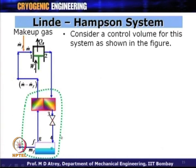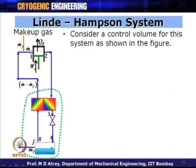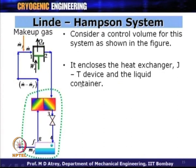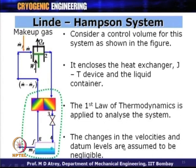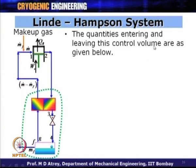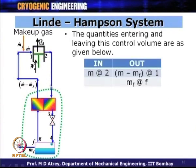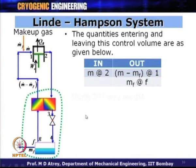Now, let us apply a control volume analysis to understand what fraction of gas gets liquefied. Consider a control volume enclosing the heat exchangers, JT valve, and liquid container as shown. Changes in velocities and datum levels are assumed negligible. Quantities entering the control volume: gas at m-dot at point 2. Quantities leaving: m-dot minus m-dot-f at point 1, and m-dot-f as liquid at point F.